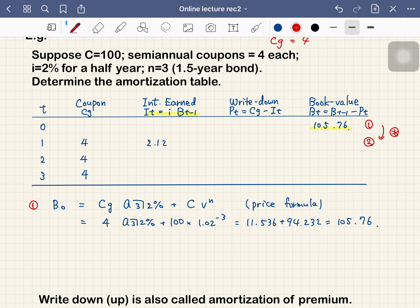You can see this is just multiplied by 0.02. Then 4 minus 2.12 is 1.88, that is the write down. We subtract 1.88 from 105.76, which becomes 103.88.